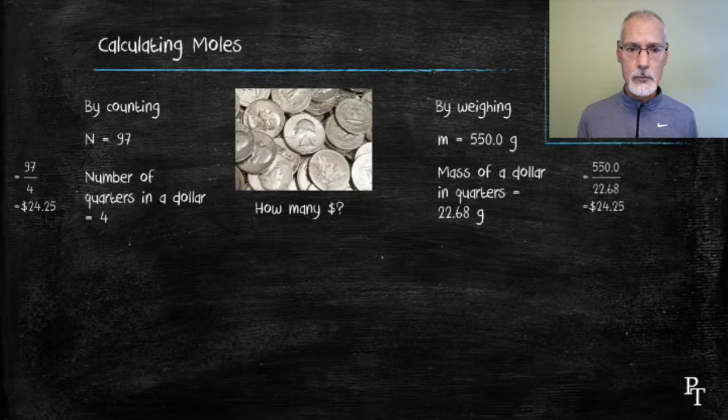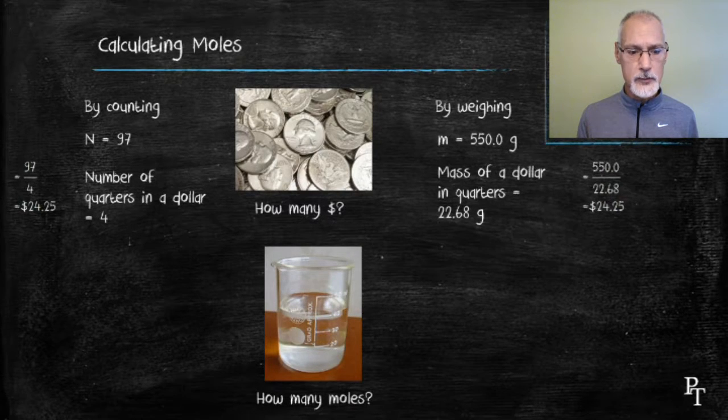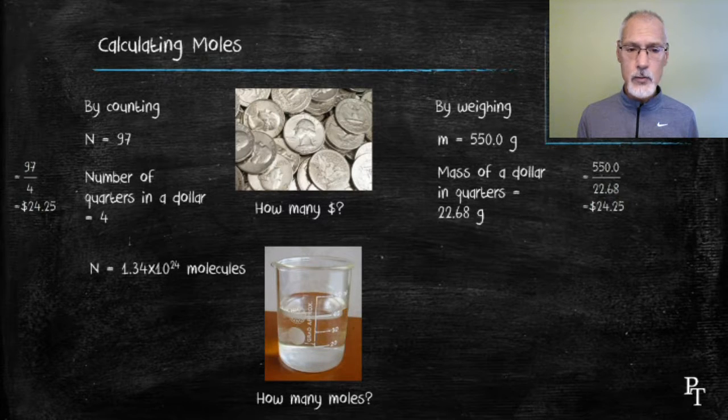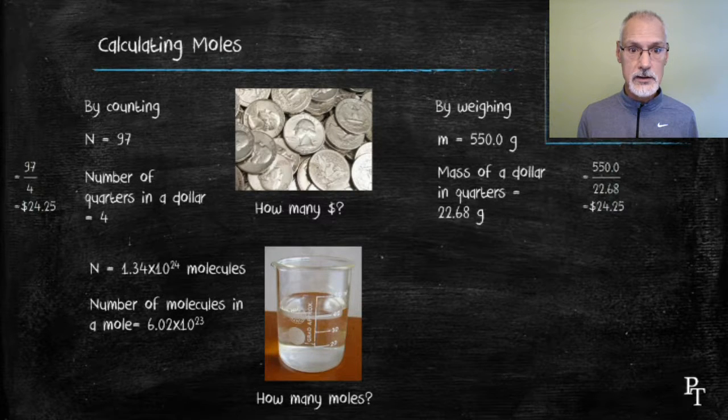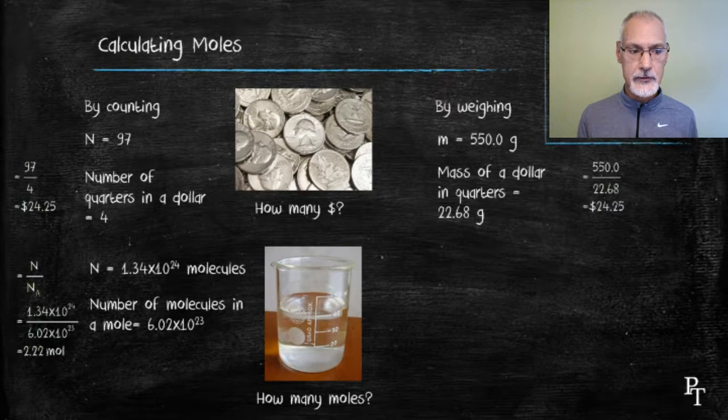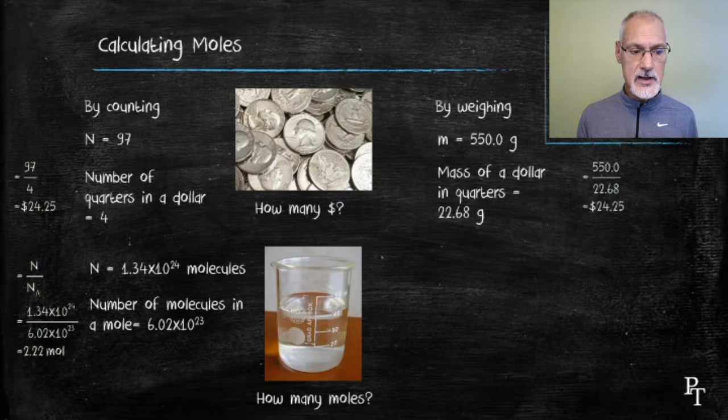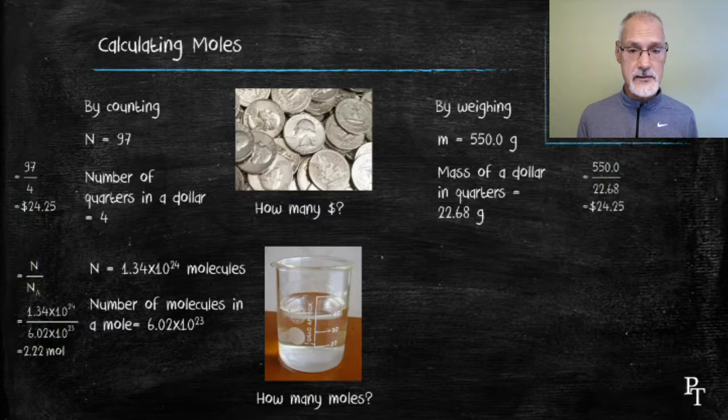I can do the same thing with moles. I want to determine how many moles there are of water present. One method would be to count. So I count the number of water molecules I have present. I know how many water molecules are present in one mole. Avogadro's number. So I simply divide them. And I arrive at 2.22 moles. Just a note here about significant digits. Both of these numbers have 3 significant digits. So my answer has 3.